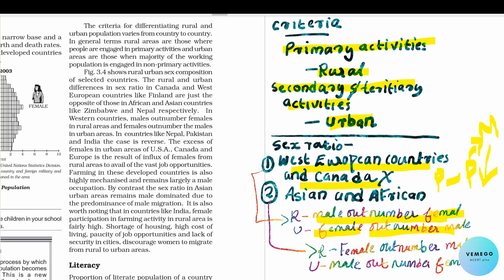Females migrate from urban areas. They migrate, and that is a great indication of sex composition patterns.